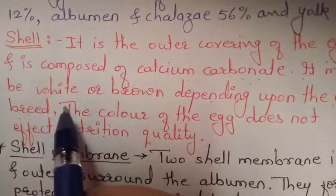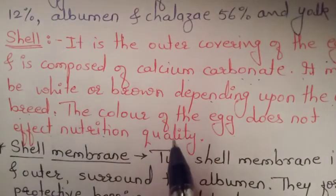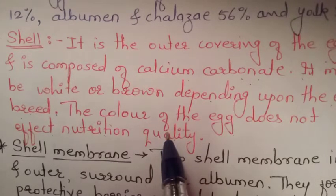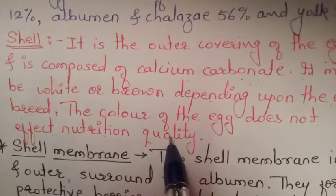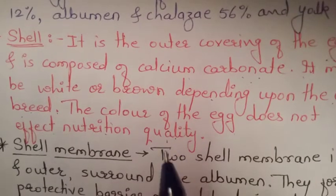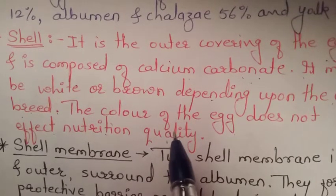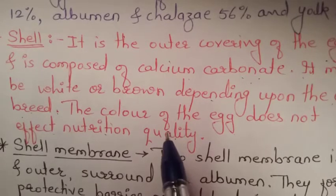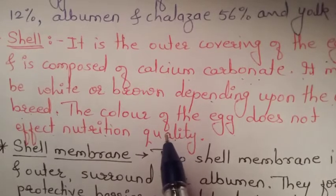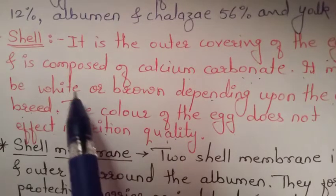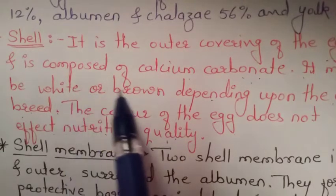The color of the egg does not affect nutritional quality. Nutrients are present — proteins, vitamin A, riboflavin, phosphorus, and iron — these are all present whether the egg is white or brown.